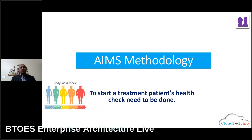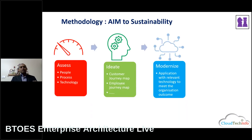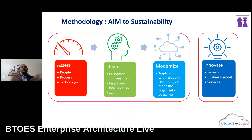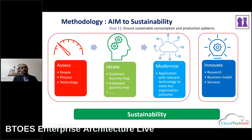What is the AIMS methodology? Before we start treatment for a patient, we check the patient — if I want to go for a marathon run, they make a complete body check first. But in digital transformation, they just make a high-level assessment and start the transformation with a multi-million investment. Based on what the company wants — whether they want to become a marathon runner or a bodybuilder — we got this methodology: Assess (people, process, technology), then Ideate, then Modernize, then Innovate. The main underlying foundation is always sustainability, ensuring sustainable consumption and production patterns — this is what UN Goal 12 tells us.